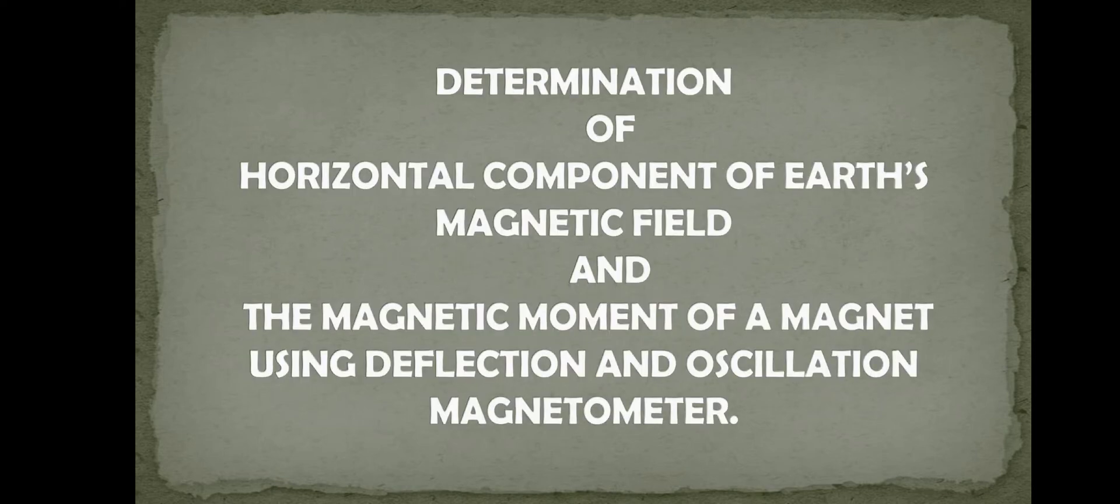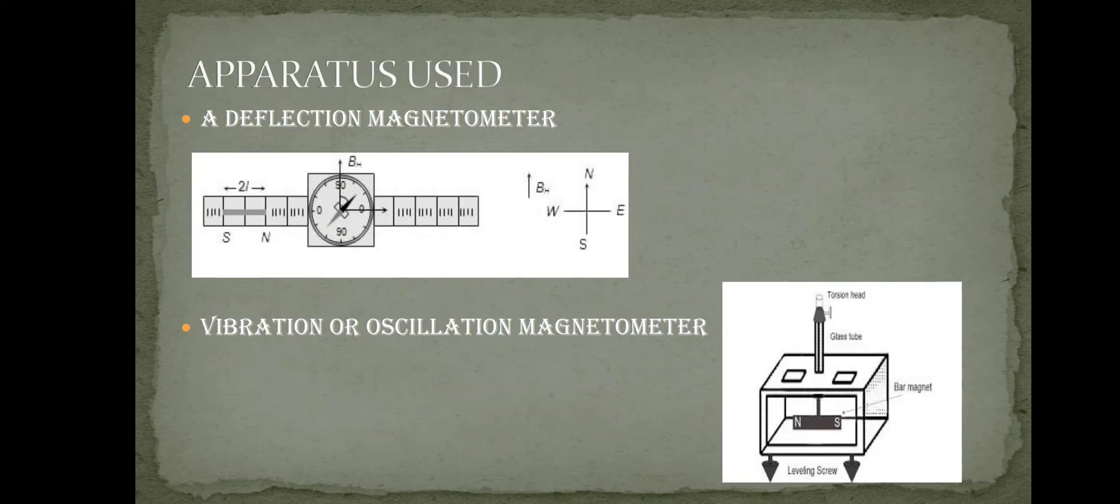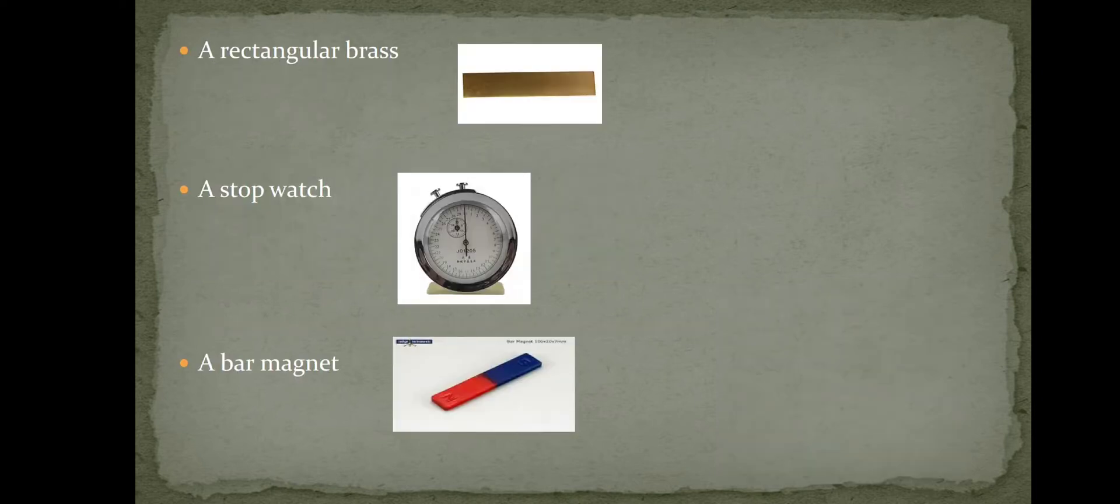Determination of horizontal component of Earth's magnetic field and the magnetic moment of a magnet using deflection and oscillation magnetometer. Apparatus used: deflection magnetometer, vibration or oscillation magnetometer, rectangular bars, stopwatch, and bar magnet.